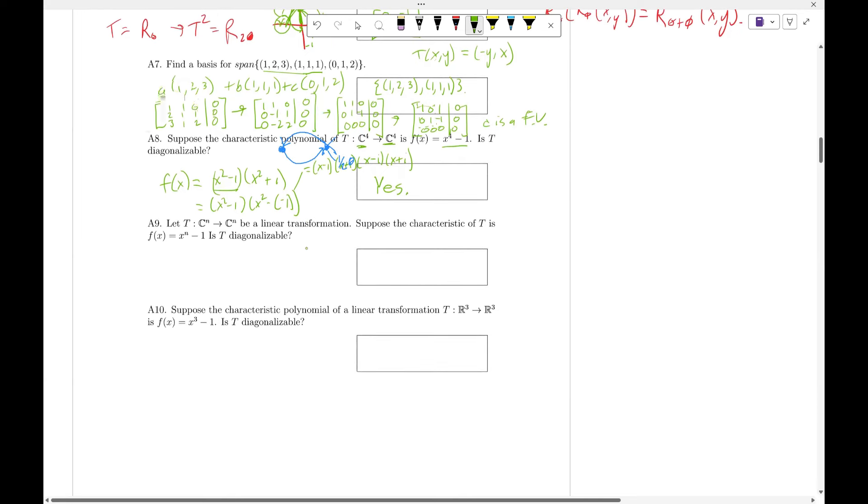And let me just remove this annotation here. We're now going to be looking at C^n to C^n, so complex linear transformation. Suppose that the characteristic is x^n - 1, is it diagonalizable? Now this is a little bit more complicated of a question.